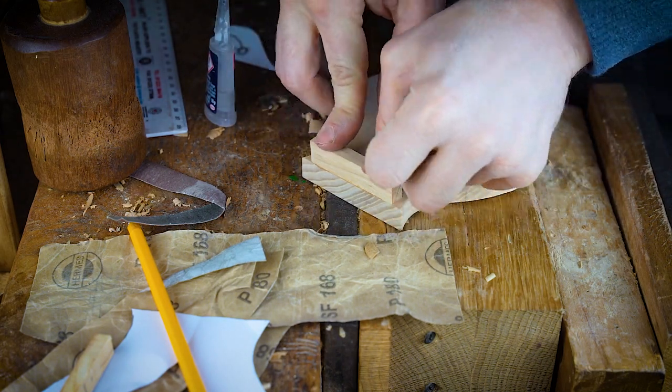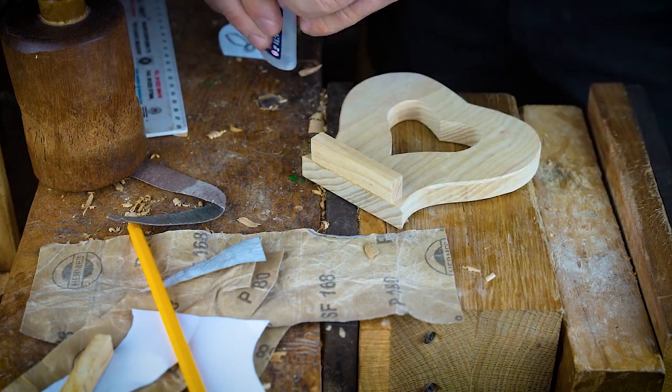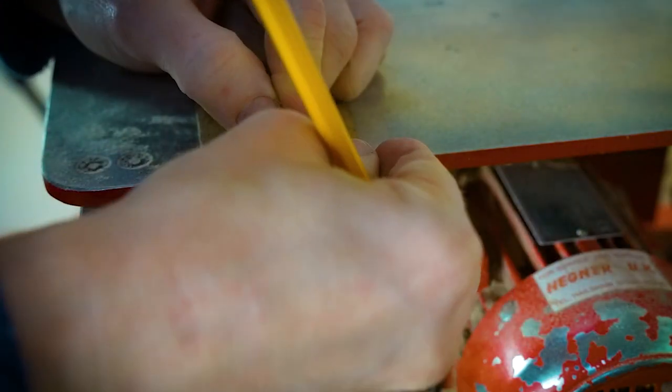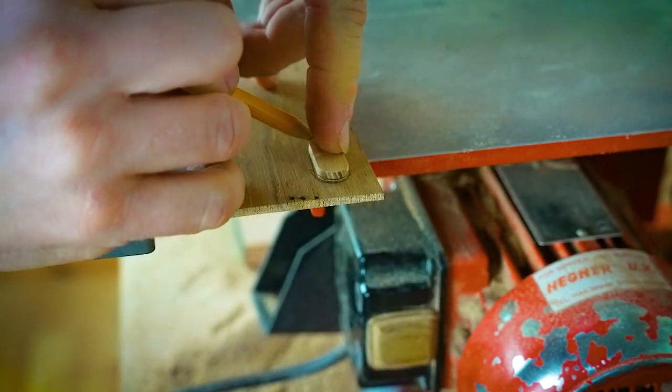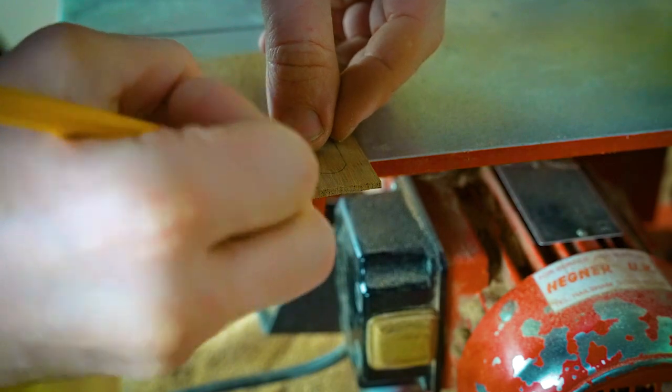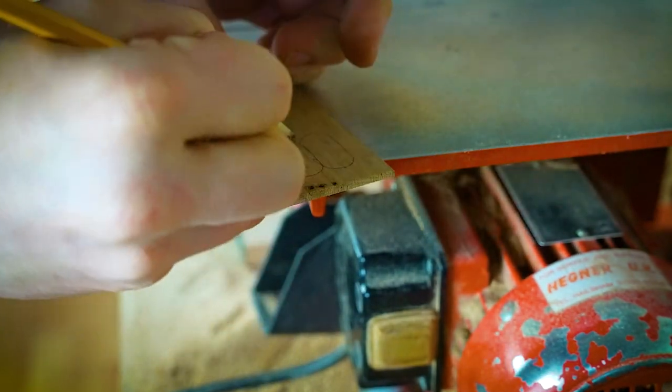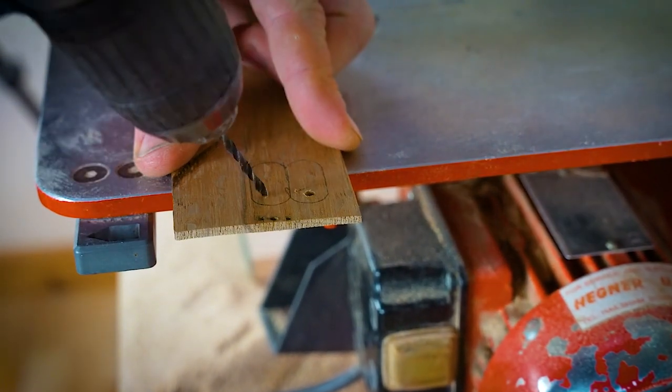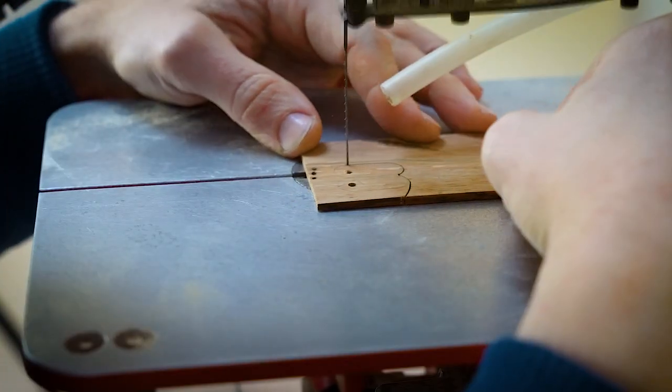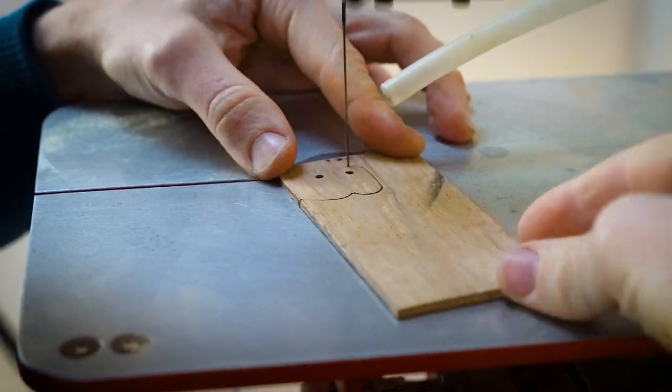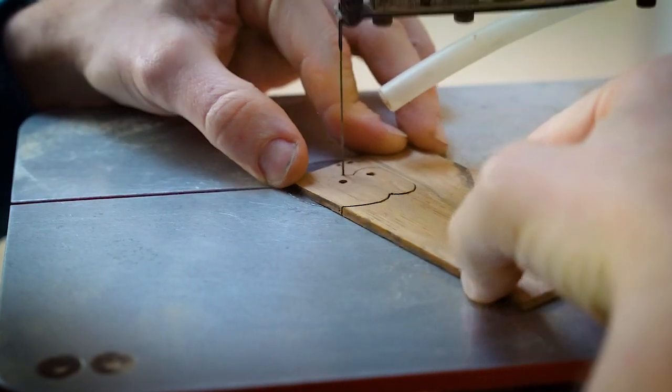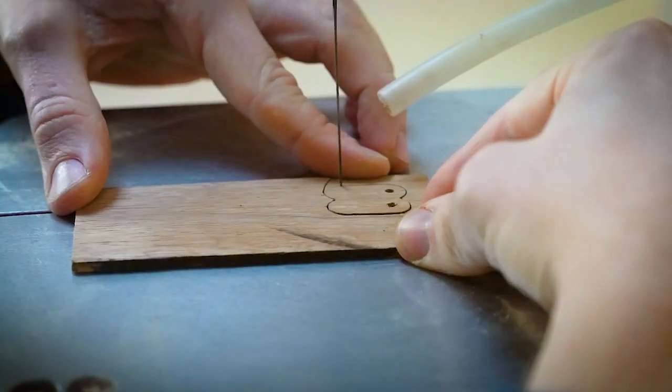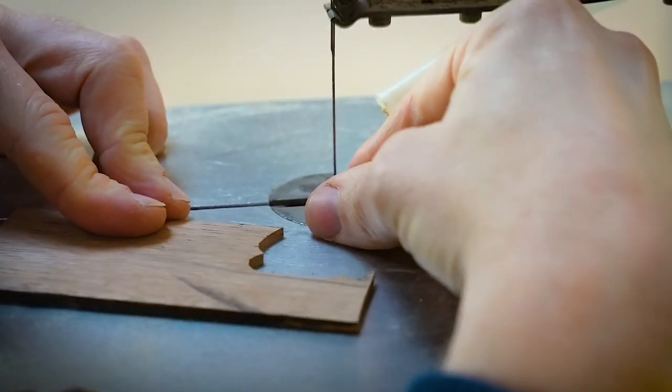Once we've finished with the sanding, we then super glue our base to the frame itself. Now the other part of this process, we have to think about keeping the picture in place. So what we do is create two little pieces of wood to secure that photo in place. These are usually quite thin pieces of wood and they'll act as two little flaps just to hold the picture in the place that we want.